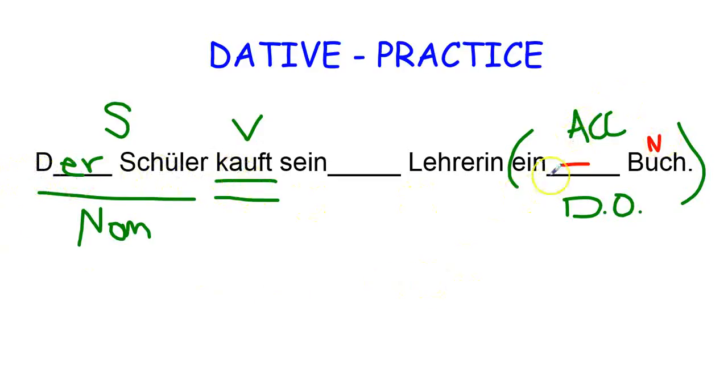Now, der Schüler kauft ein Buch for whom or to whom? For his female teacher. This is the dative case because this is the indirect object. So, because it's the indirect object, we want to make sure we have the gender. So the gender of Lehrerin, it's feminine or weiblich.